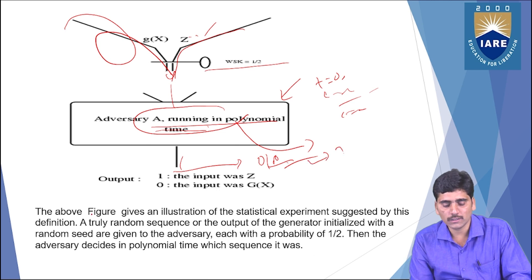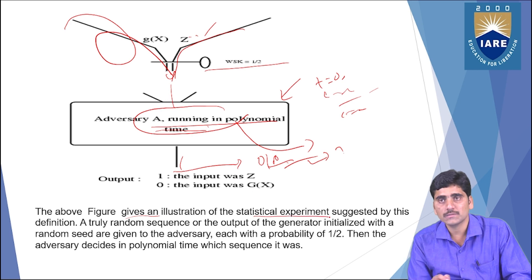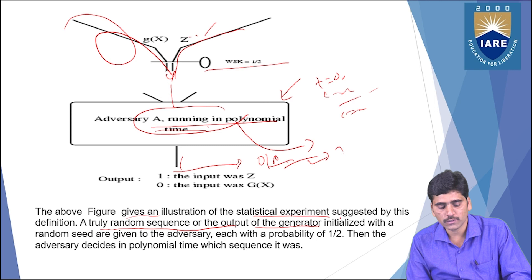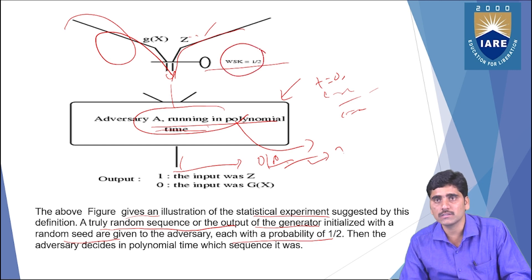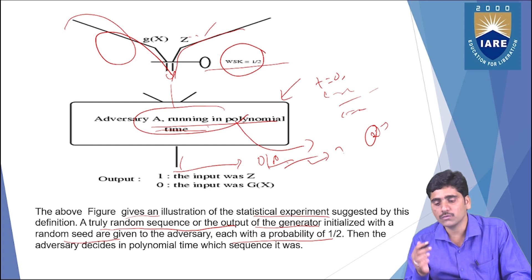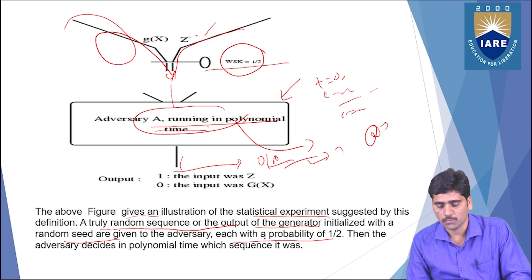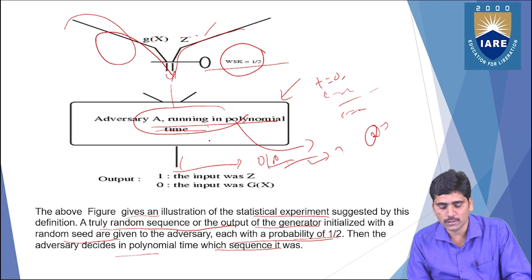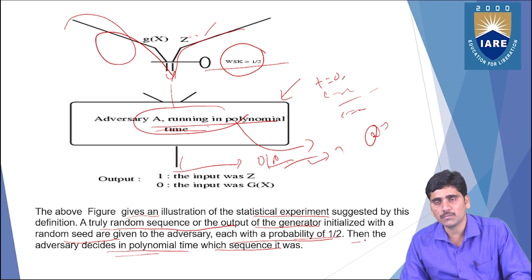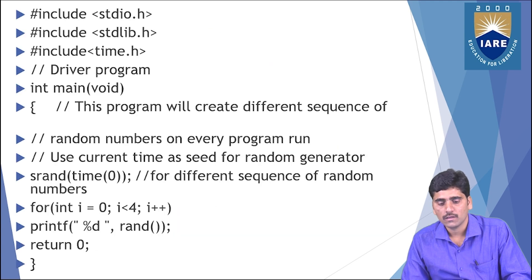By looking at the above figure, it is a statistical experiment suggested by this definition. A truly random sequence or the output of the generator initialized with the random seed is given to an adversary. There is a probability of 1/2 — meaning we will get either the truly random number or the pseudo-random number. The adversary decides in polynomial time which sequence it is. Every bit looks random given all the previous bits, and the generated sequence length is decided by this polynomial time.